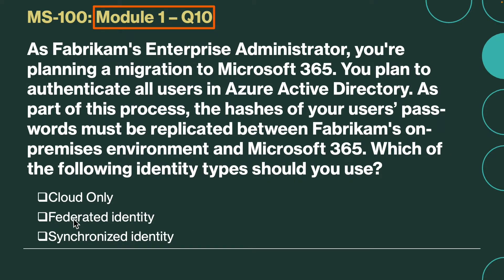Question number 10. As Fabrikam's enterprise administrator, you are planning a migration to Microsoft 365. You plan to authenticate all users in Azure Active Directory. The hashes of your users' passwords must be replicated between Fabrikam's on-premises environment and Microsoft 365. Which of the following identity types should you use? Is it cloud only, federated identity, or synchronized identity? The correct answer is synchronized identity. With synchronized identities, hashes of user passwords are replicated from on-premises Active Directory to Azure Active Directory. When passwords are changed or reset on-premises, the new password hashes are immediately synchronized to Azure AD, so users can always use the same password for cloud and on-premises resources.